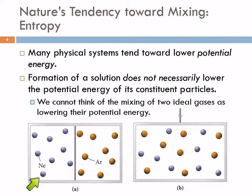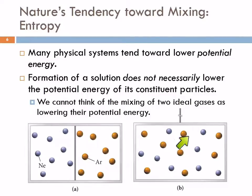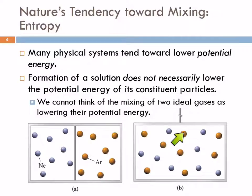If we think about two noble gases — neon and argon — separated by a partition in a box, when we remove that partition the particles are going to mix. But does that lower their potential energy? No, it doesn't. An ideal gas experiences no interactions with other particles, so the argon atom feels completely alone in the universe either way. Mixing the two gases does nothing to their potential energy, so potential energy is not a driving force for mixing.